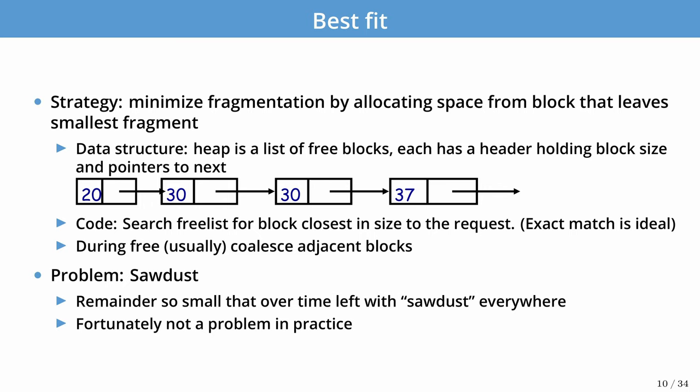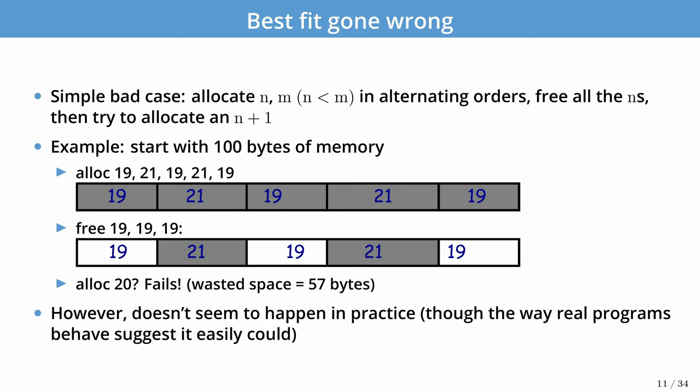The main problem with best fit is that over time we're going to be left with a bit of sawdust — tiny fragments throughout that we don't know what to do with. This isn't really a problem in practice and can sometimes be mitigated by having a minimum size for allocation. A pathological case for best fit is allocating alternating blocks of size n and size m, then freeing all the n's and trying to allocate something slightly larger than n. For example, starting with 100 bytes: alloc 19, 21, 19, 21, 19, then free all 19-byte regions — we're left with 57 bytes total but can no longer allocate even a 20-byte region. In practice, this doesn't match the way most real programs behave.